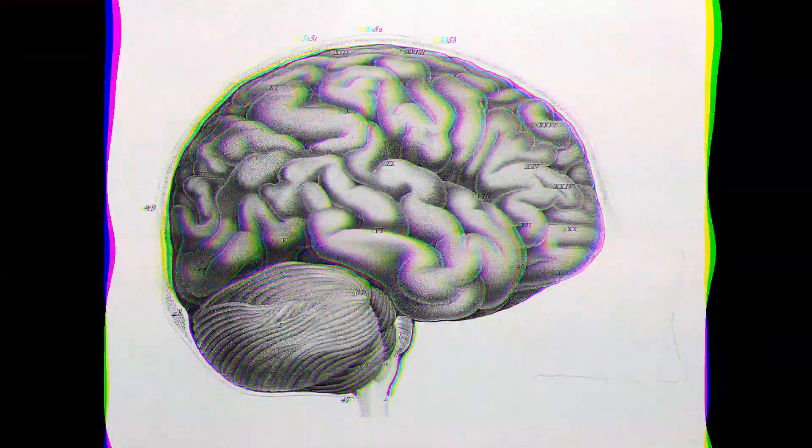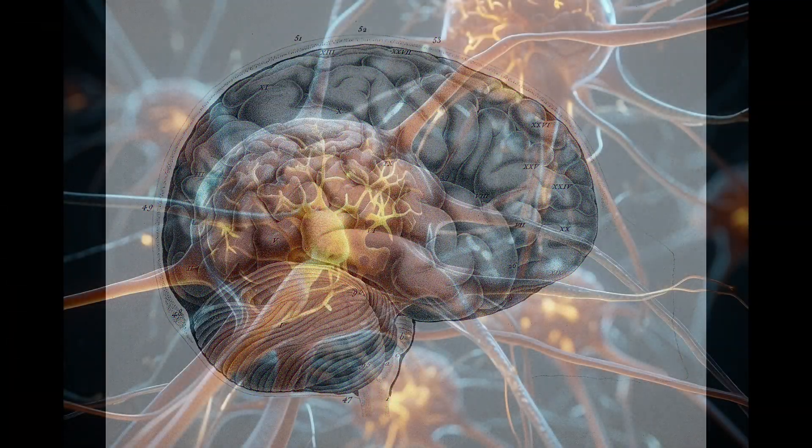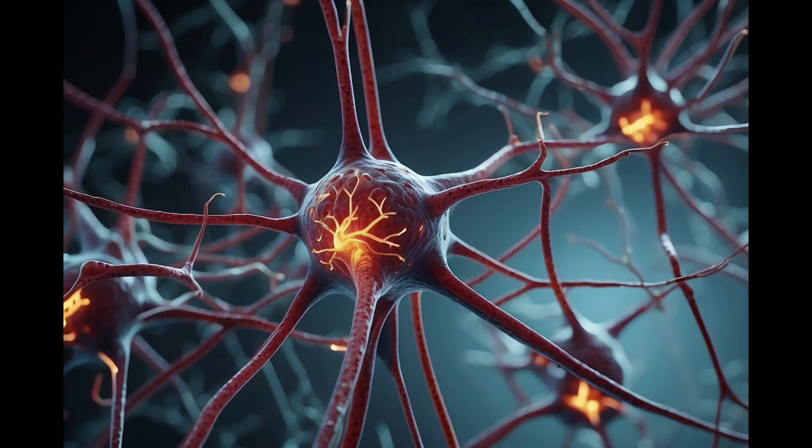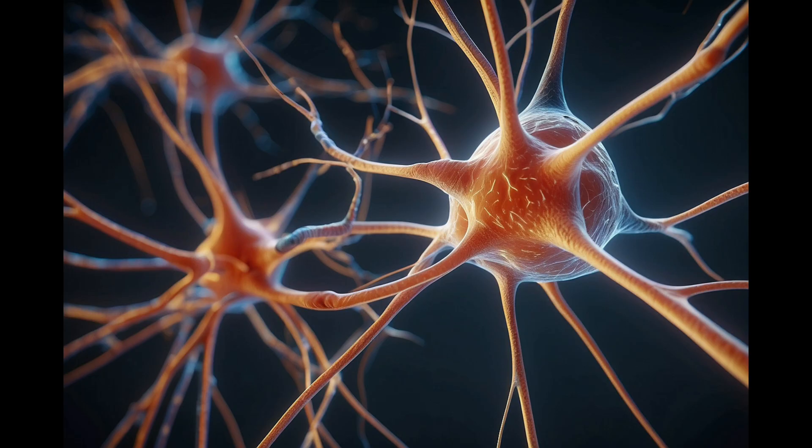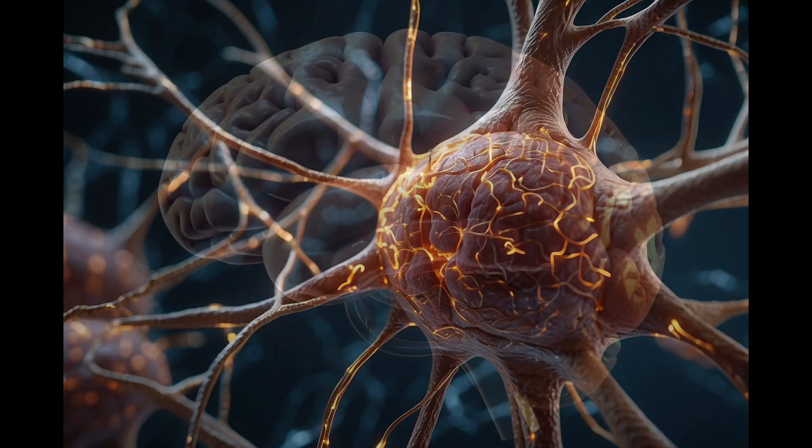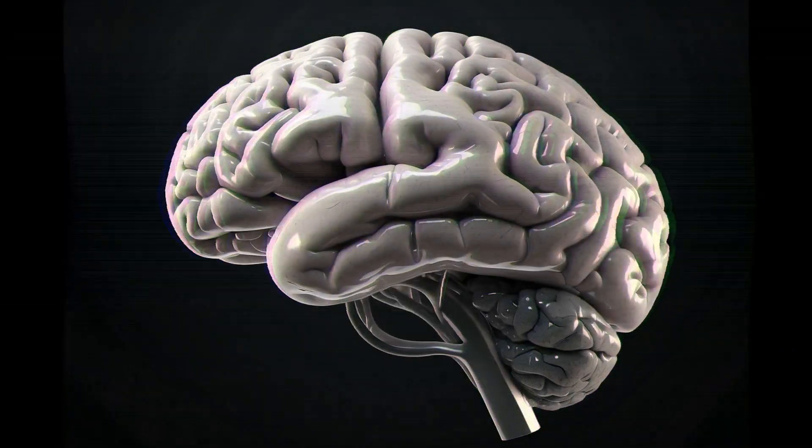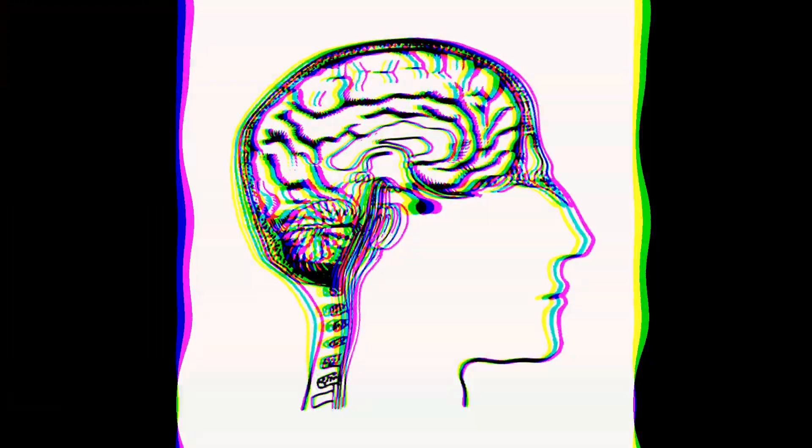At its core, the human brain is composed of billions of nerve cells called neurons, each interconnected through a vast network of synapses. These neurons communicate with one another through electrical and chemical signals, forming complex circuits that underlie every aspect of human cognition and behavior.